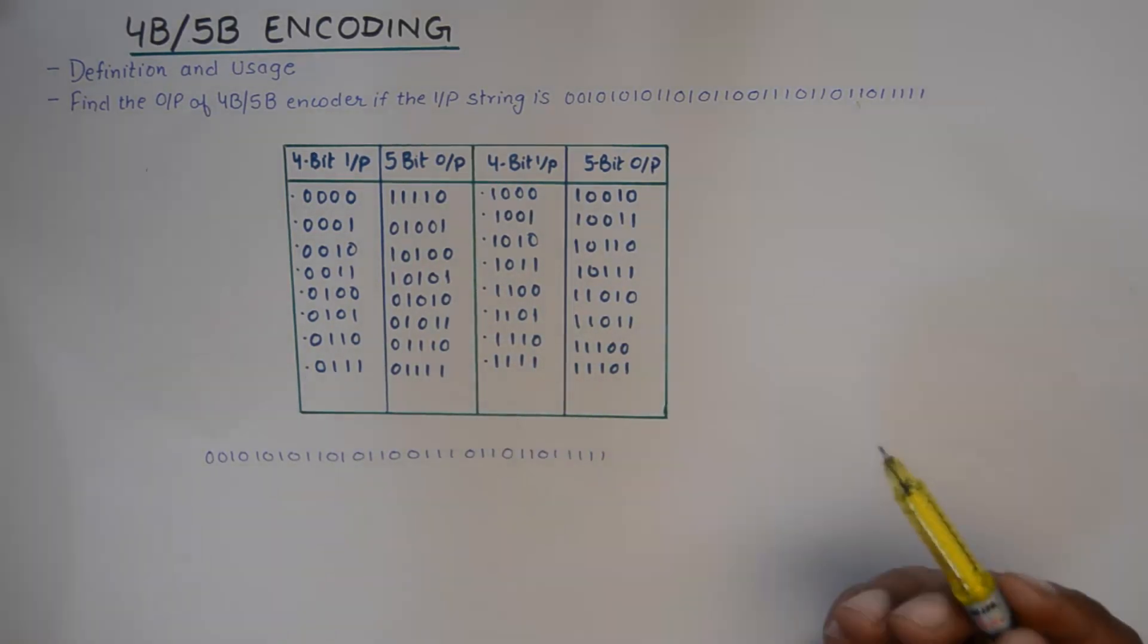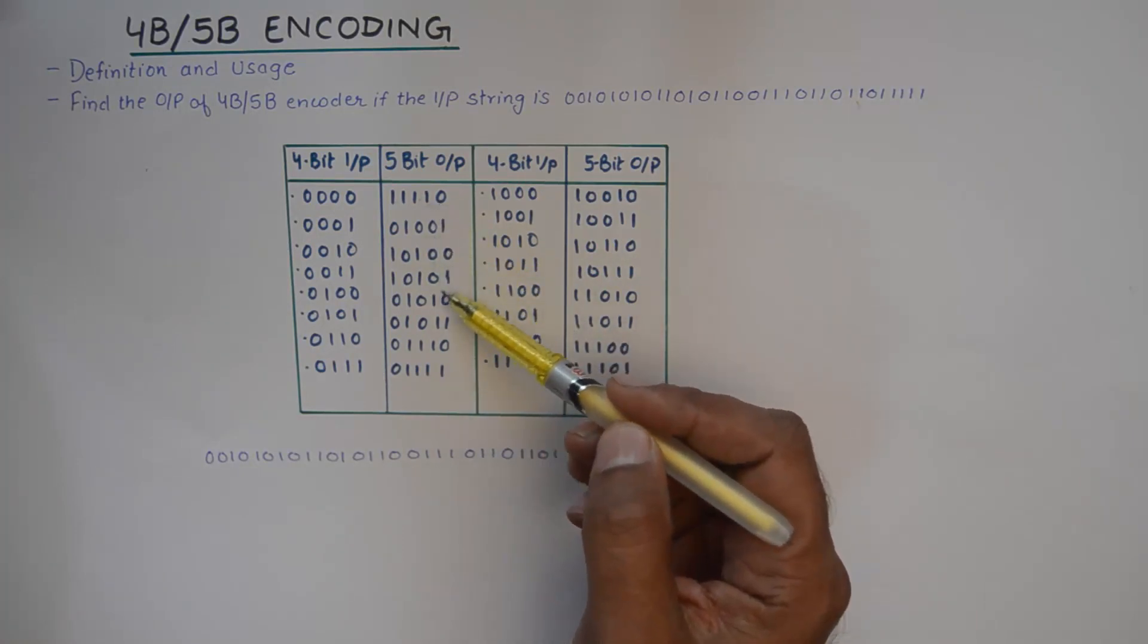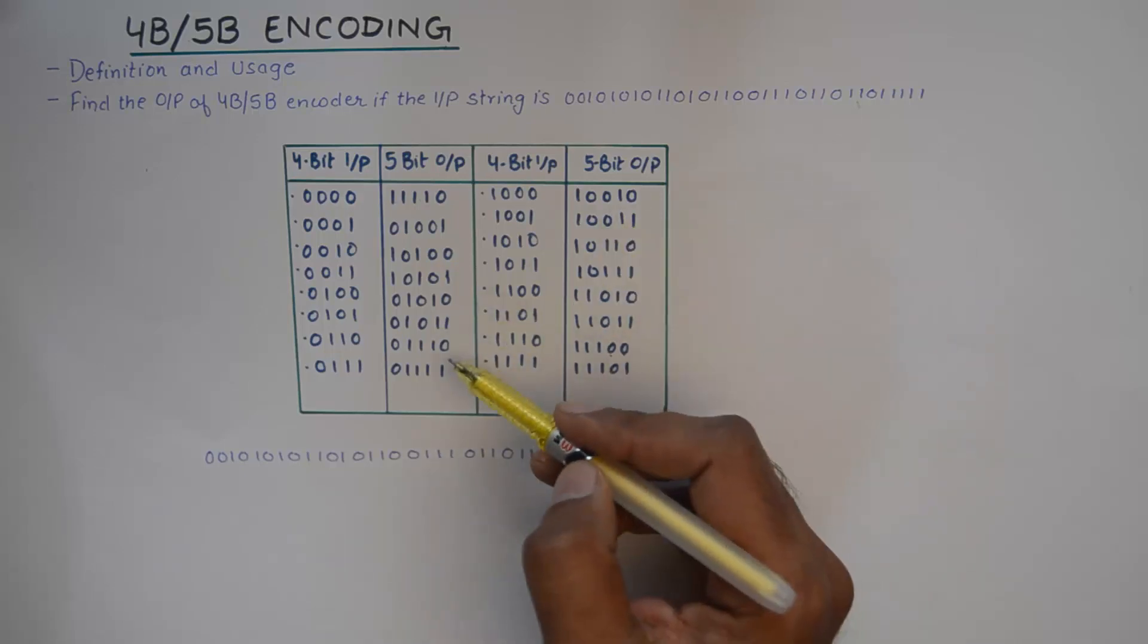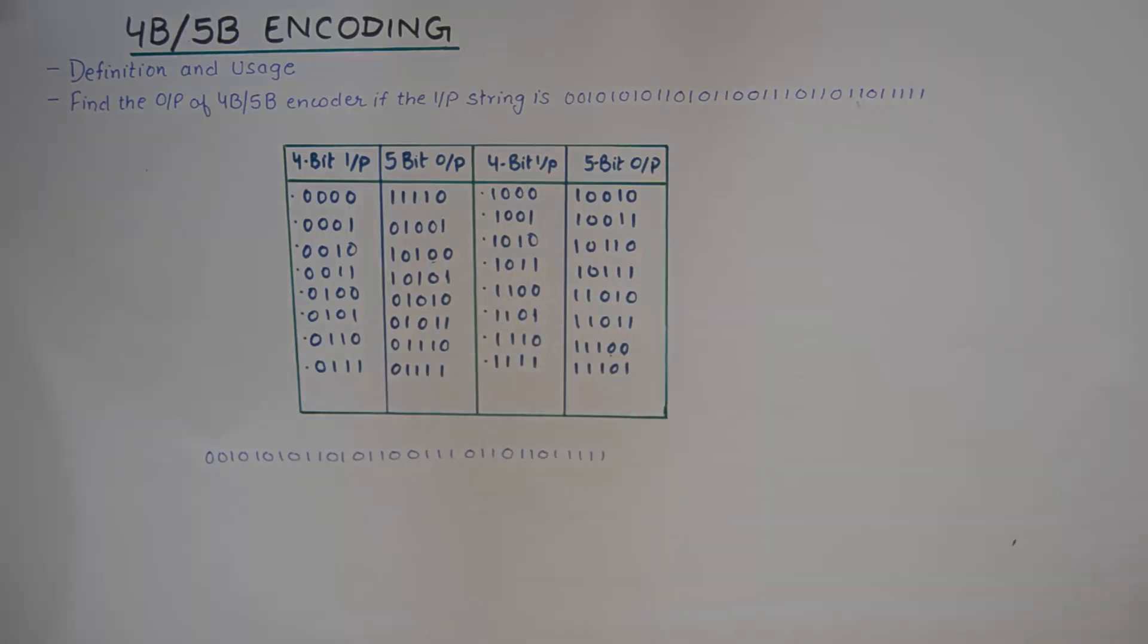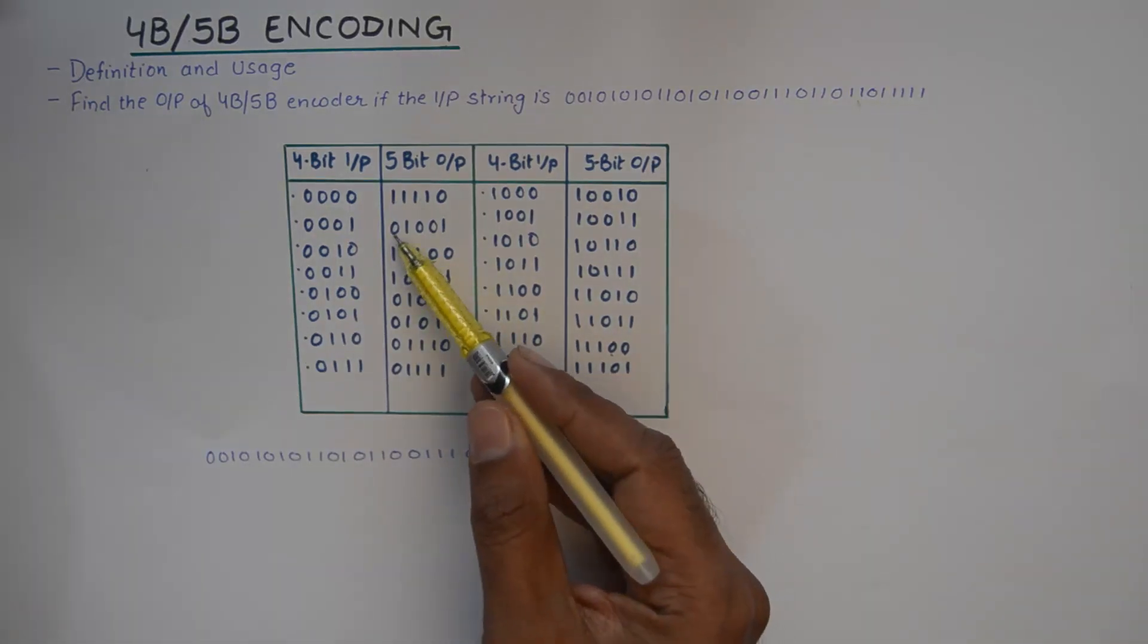Now if you look further closely, the last two strings are at most 00. So I have a 00 here and a 00 here only. And the first string is at most one zero.